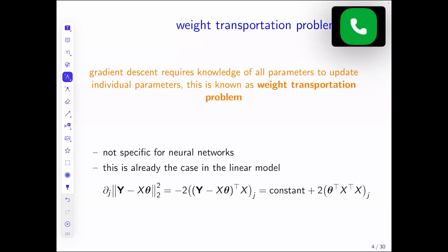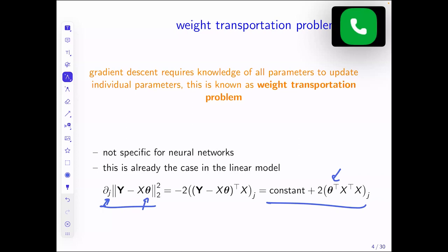Just to see there's nothing special about neural networks — even for the linear model, if we look at the partial derivative of the loss J with respect to the parameter of interest theta_j, this is basically the increment we add in gradient descent. And if we work it out, even in the linear model, it depends on the whole parameter vector theta, not only on the j-th component. So whatever you do with gradient descent, you always need to know the whole state of the model at that moment.